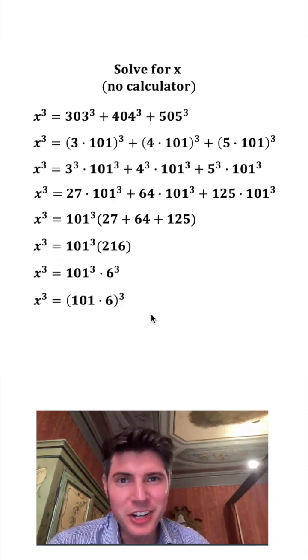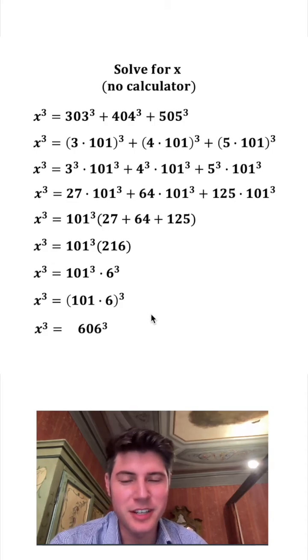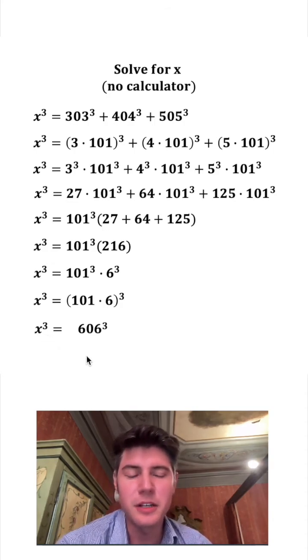So now we can do inside of the parentheses, and what is 101 times 6? It's 606. So we can rewrite this as x cubed equals 606 cubed.